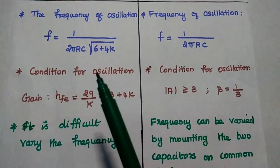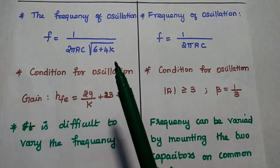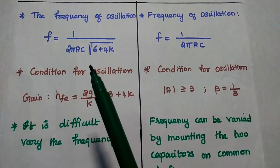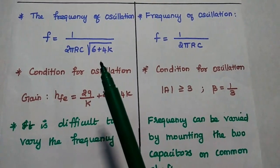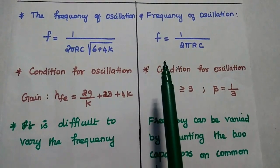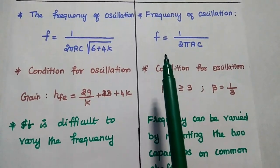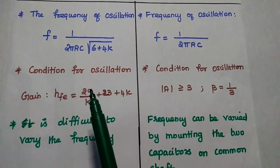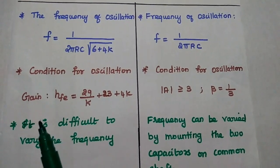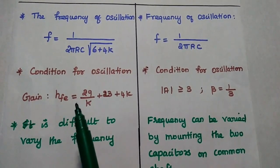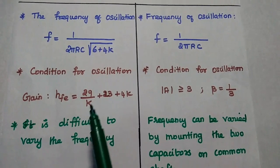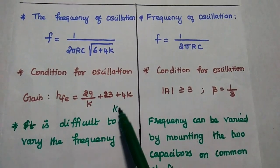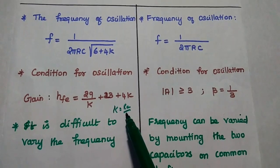In the RC phase shift oscillator, the frequency of oscillation is given as f = 1 / (2π RC √(6 + 4K)). For the Wien bridge oscillator, f = 1 / (2π RC). The condition for oscillation is that the gain value HFE equals 29/K + 23 + 4K, where K = RC/R.